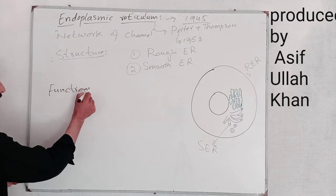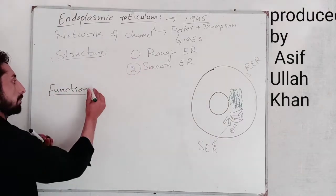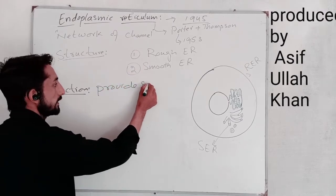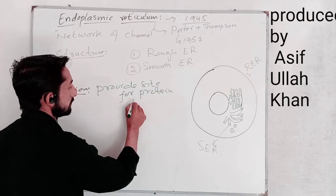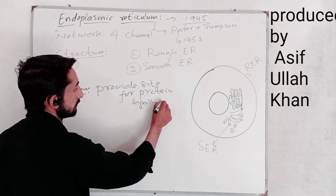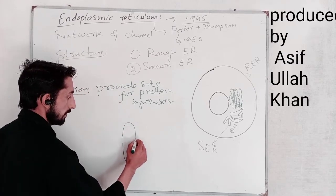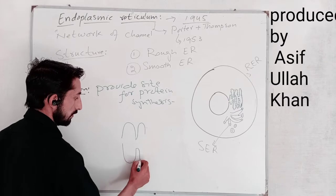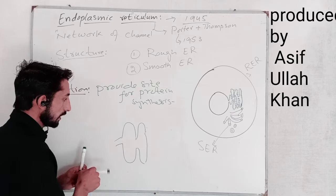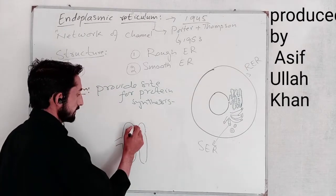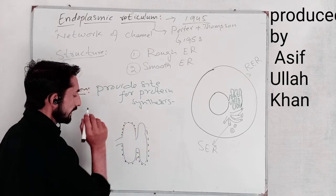The rough endoplasmic reticulum provides a site for protein synthesis. Here the ribosomes are attached to the surface of the cisternae, making it a key platform for protein production within the cell.